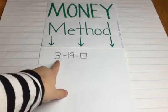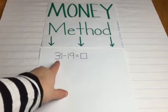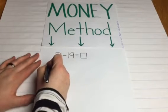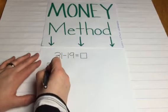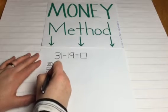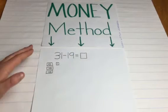For the money method, we're going to start with 31 minus 19. So for 31, it has three tens and one ones.